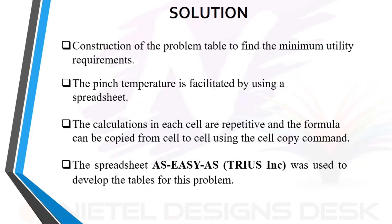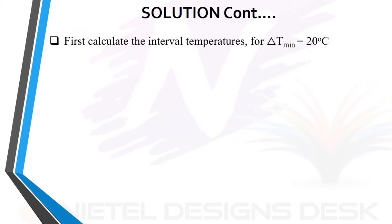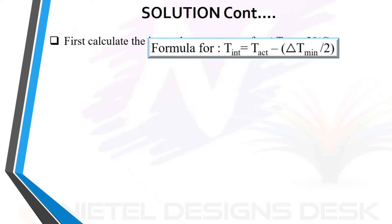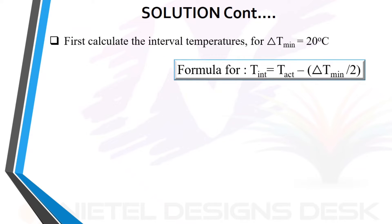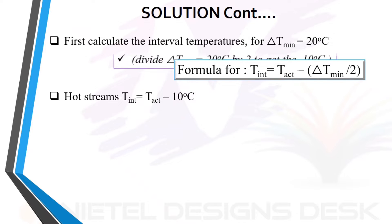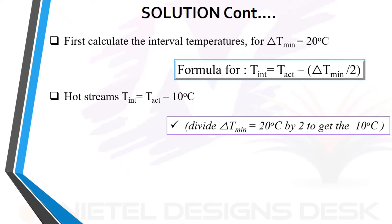A video on how to develop the tables will be posted soon — if interested, drop a comment in the video's comment section. First, calculate the interval temperatures. For hot streams, T_int equals T_act minus ΔT_min divided by 2, and for cold streams, T_int equals T_act plus ΔT_min divided by 2.